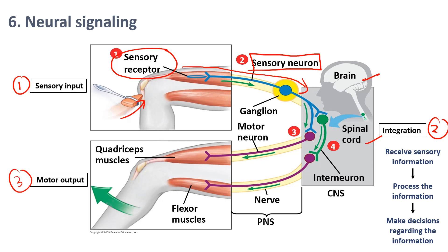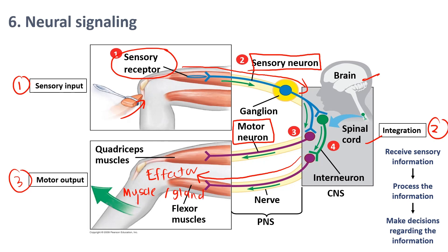For example, if you feel pain, your brain might decide to move you away from the painful stimulus. Once the CNS makes a decision, it carries out motor function, sending an impulse along peripheral nerves through motor neurons to the effector — which can be muscles or a gland. Muscles can be skeletal, smooth, or cardiac muscle. In this example, it stimulates the skeletal muscle and causes the quadriceps to stretch, making the lower leg kick outward.